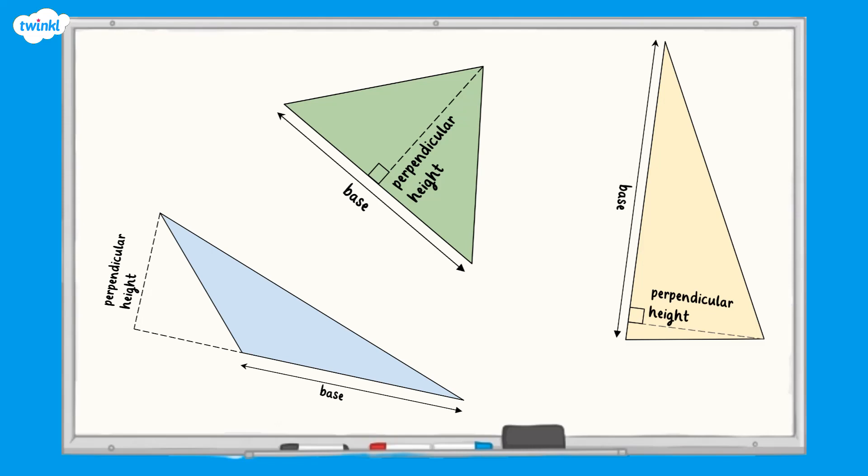When working on paper, you may find it useful to rotate your paper so that the base is a horizontal line, like this.